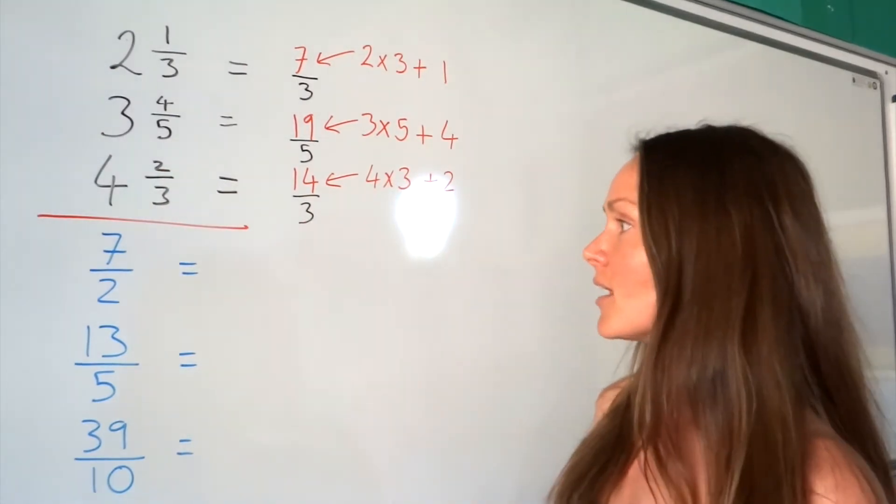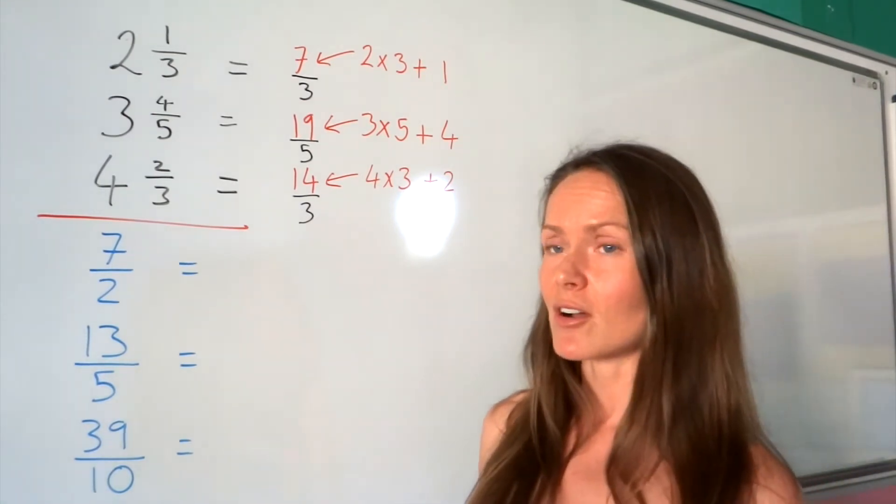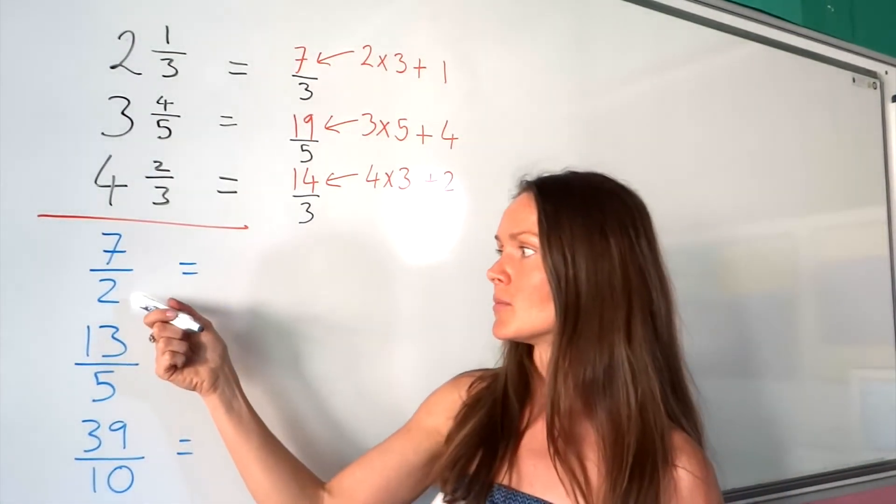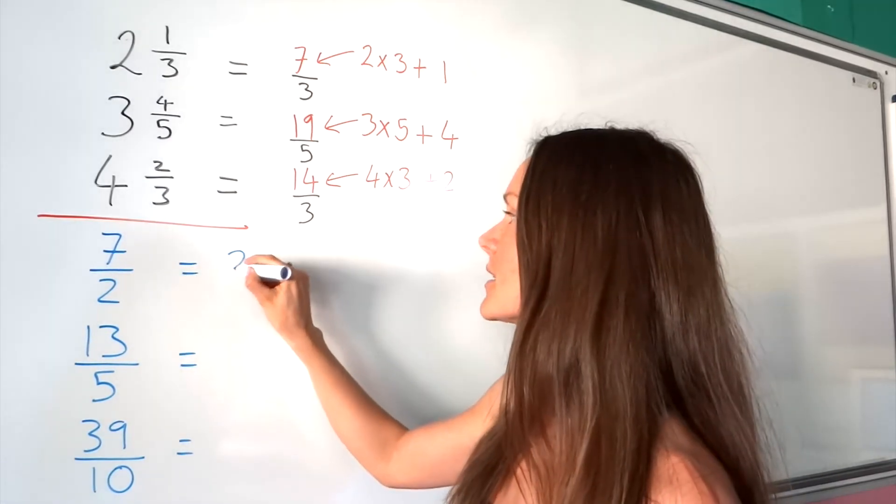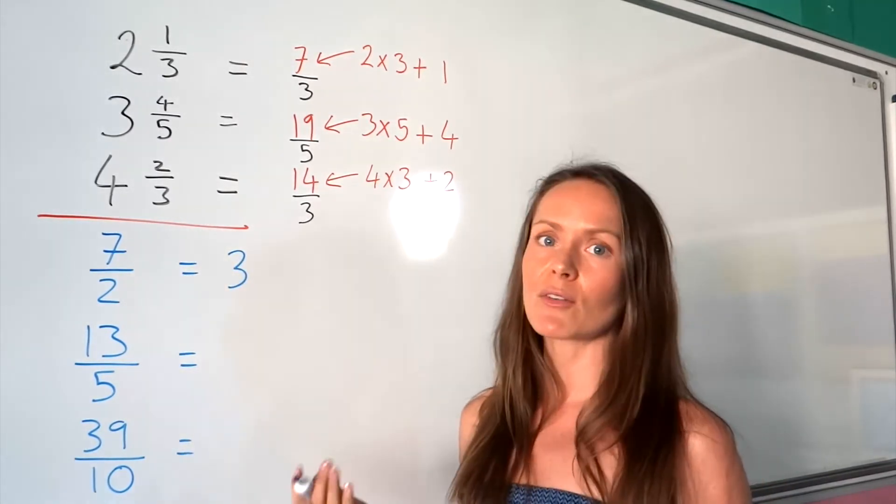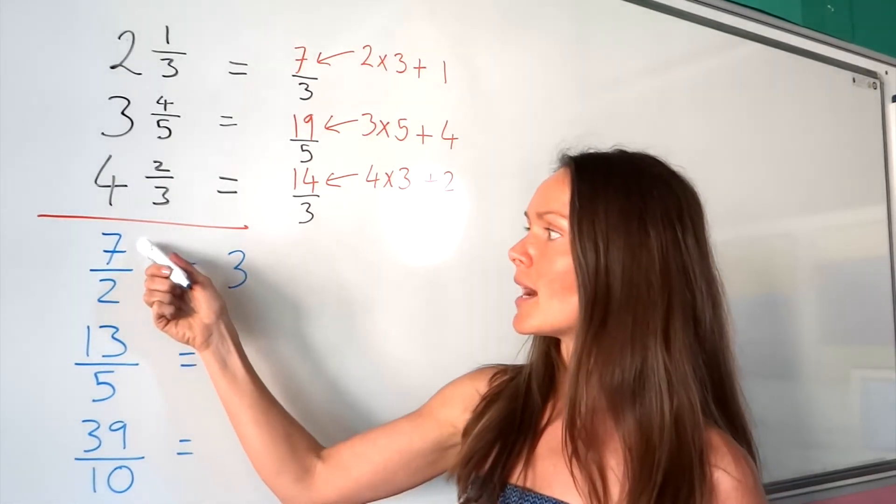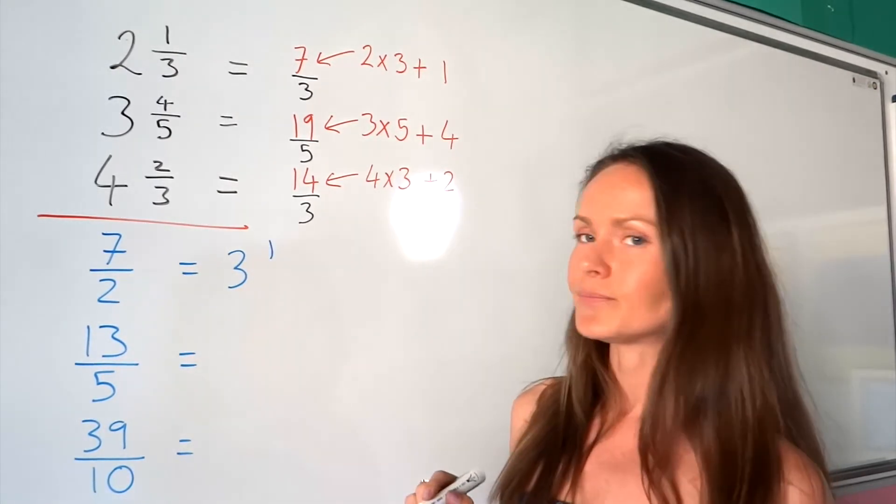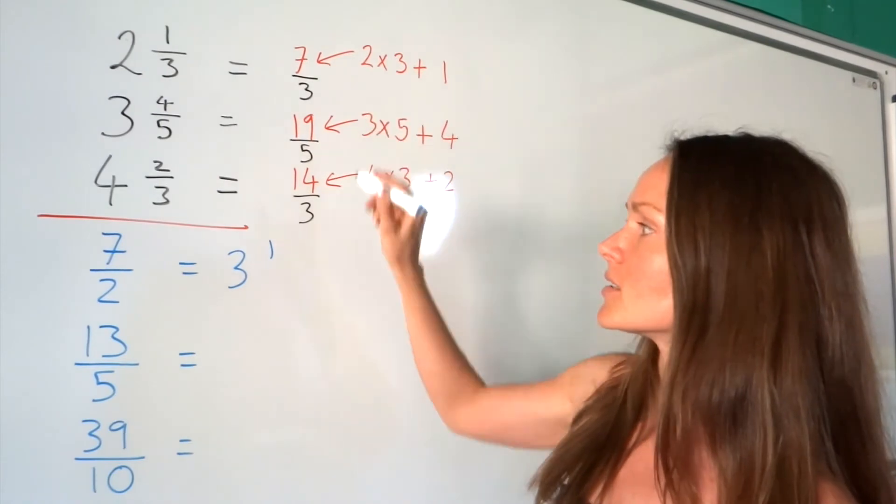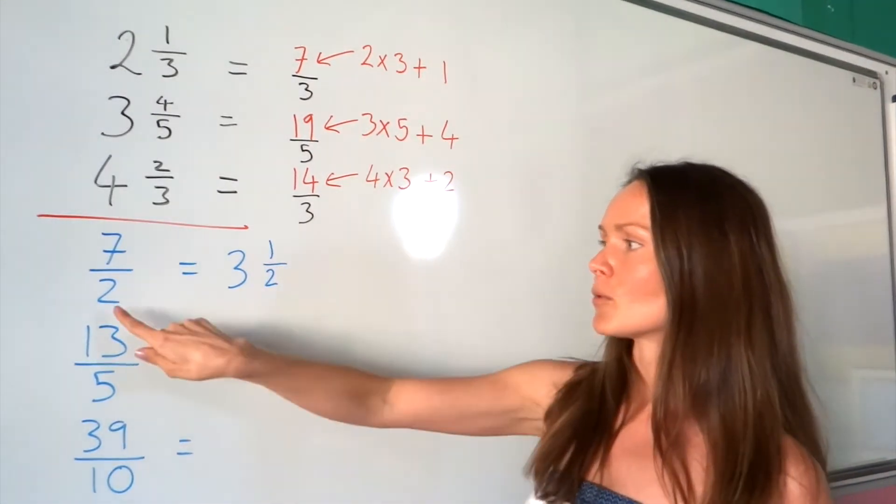To convert improper fractions to mixed numbers, ask yourself: how many times does the denominator fit exactly into the numerator? How many times does 2 fit into 7? It fits 3 times, but there's a remainder. Three times 2 is 6, but our numerator is 7, so there's a remainder of 1. The denominator stays the same. So 7/2 equals 3 1/2.